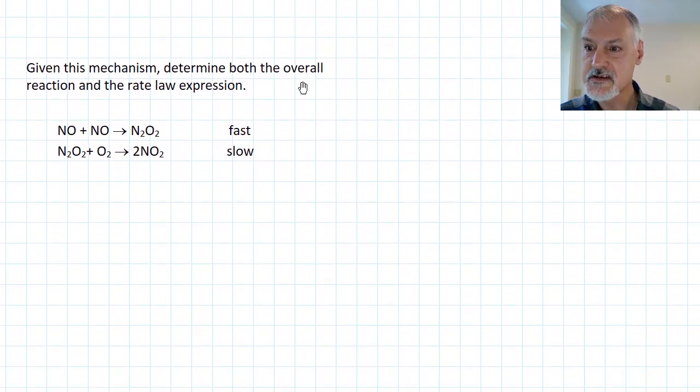In my last example, I want to determine both the overall reaction and the rate law expression for this. So these are my two steps that are proposed. So the first thing I'm going to do is add these up to determine the overall reaction. There's the temporary intermediate species that cancels. So the reaction overall is 2NO + O2, producing 2 nitrogen dioxide.